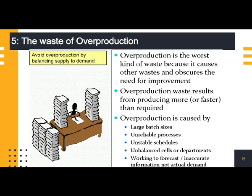Number five: the waste of overproduction. The most serious of all seven wastes, overproduction is making too much or too early. This is usually caused by working with oversized batches, long lead times, poor supplier relations, and a host of other reasons. Overproduction leads to higher levels of inventory, which masks many of the problems within your organization. The aim should be to make only what is required by the customer.